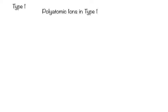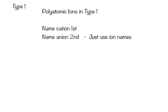If we introduce polyatomic ions into our type 1 nomenclature, the rules are you name the cation first and the anion second. In this case, we just use our ion names. We don't have to add an IDE suffix. We just name whatever the anion is. Let's take a look at some examples.